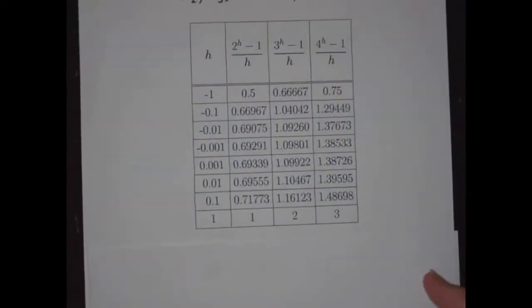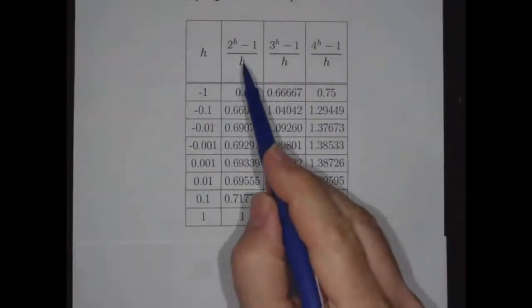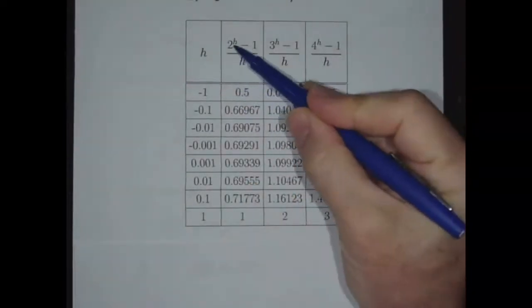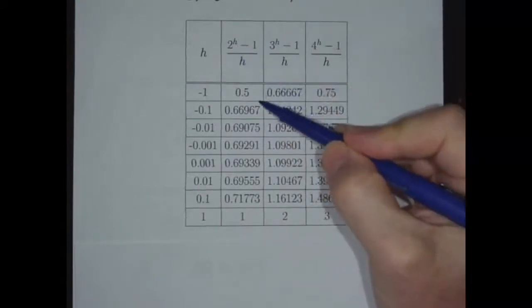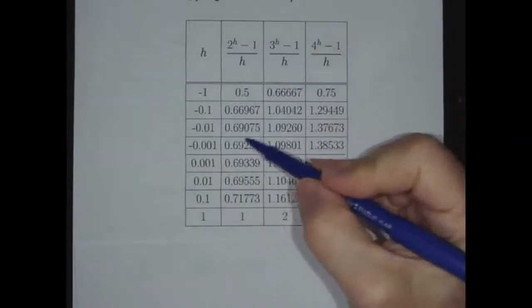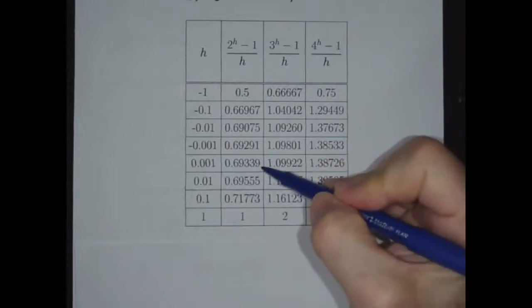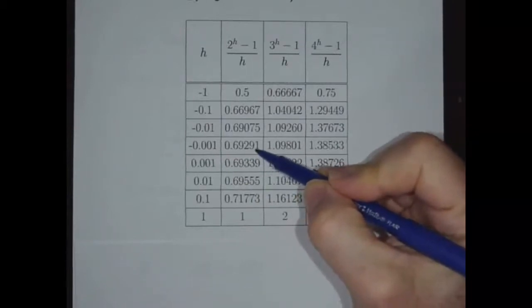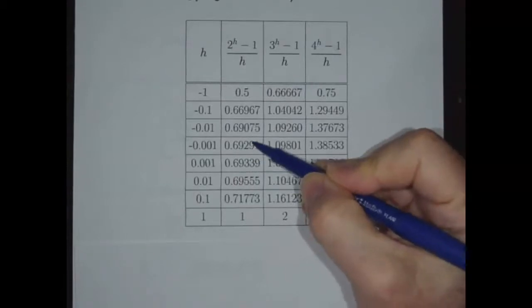So here's what we have for a. Here's a equals 2, a equals 3, and a equals 4. When a equals 2, you look at 2 to the h minus 1 over h, and you just plug in numbers. And you see when h is 0.001, you get 0.693. And when h is negative 0.001, you get 6929. Well, that's basically 693. We see that when h is very, very close to 0, we get a number that's around 0.693.